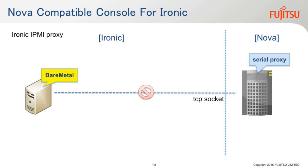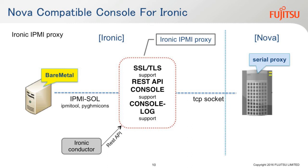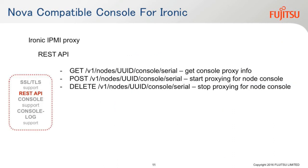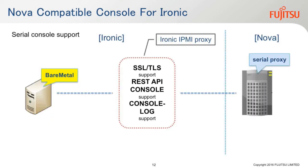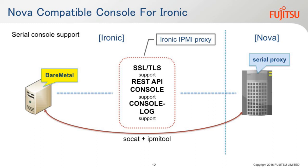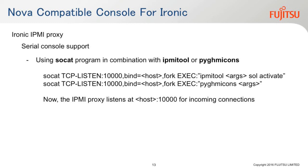As I just explained, currently the bare metal cannot connect to the NOVA shell proxy, so the operator or user cannot use Horizon to access via the web shell console. To overcome this, we propose the Ironic IPMI proxy, acting as a bridge between the bare metal and the NOVA shell proxy, with a REST API. With the REST API, we can support getting console proxy information or starting and stopping the proxy when it receives requests from the Ironic conductor — or from the operator or user. For serial console support, we use the socat program in combination with IPMI tool or ipmitool with the sample command line as you can see on the screen.